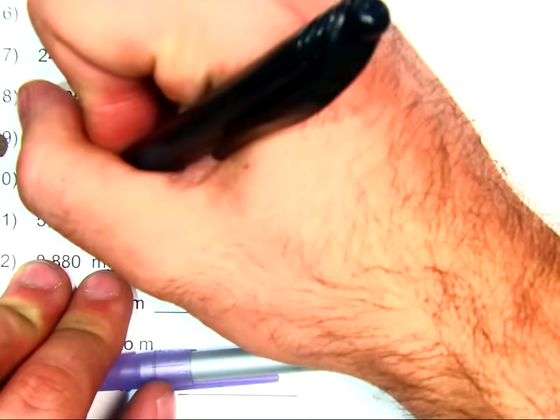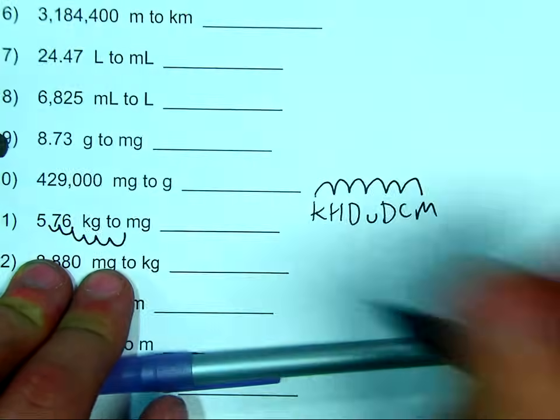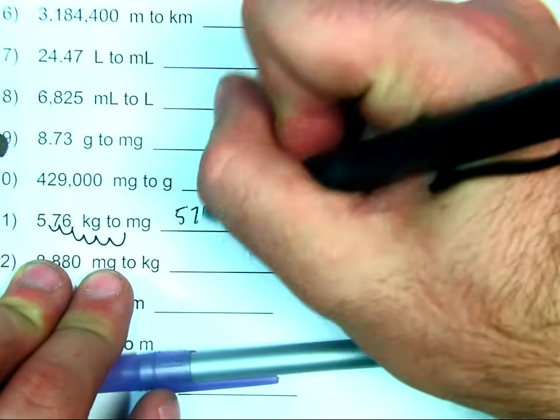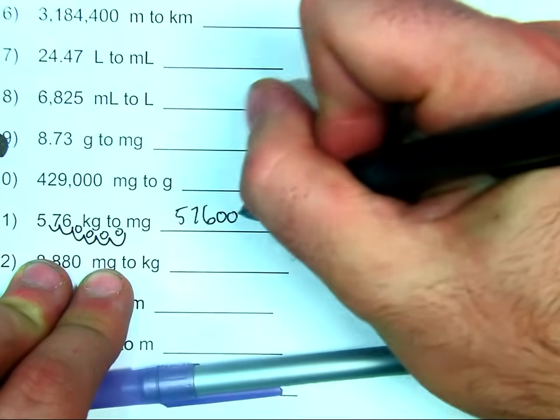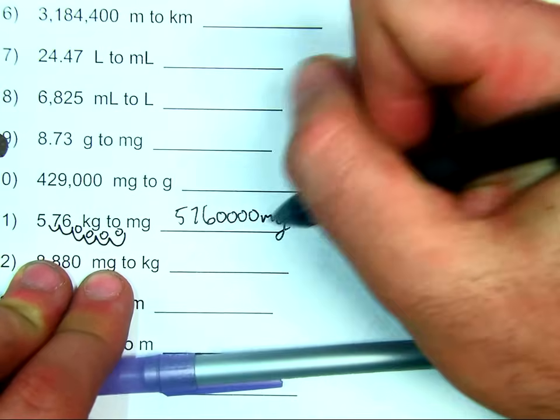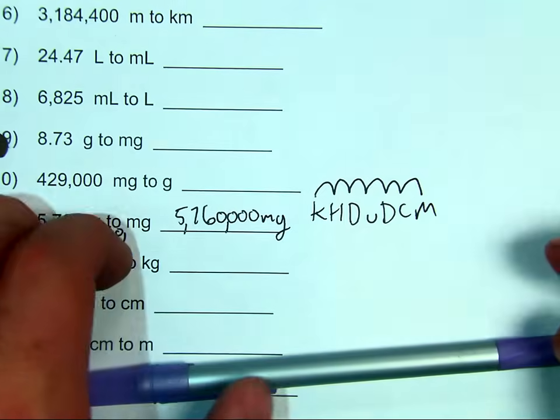So, I'm going to go one, two, three, four, five, six spaces to the right. I have 576. And then, one, two, three, four placeholder zeros. Now, I'm going to add some commas to make sure it looks right. 5,760,000 milligrams.